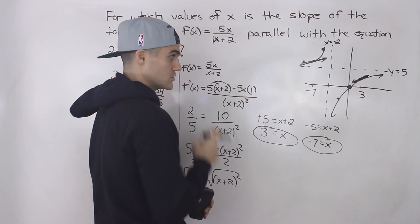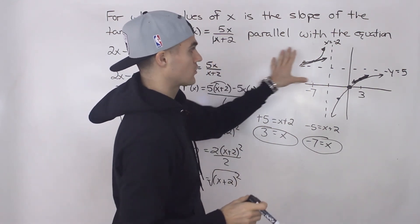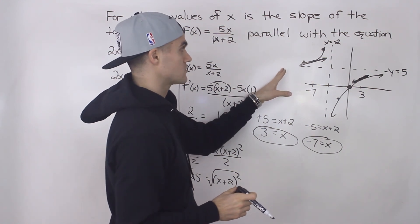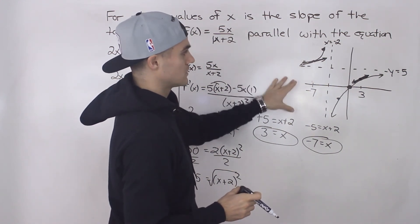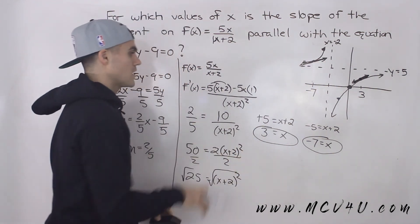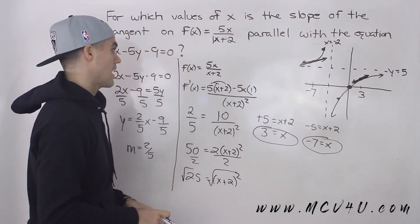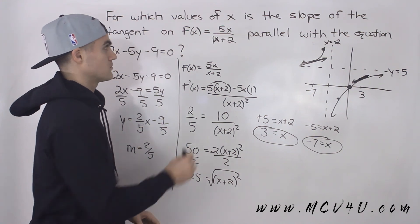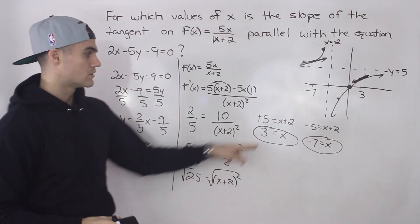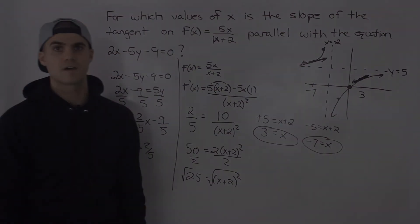So that's how you do it. And again, you're not always going to be able to graph the function out or it would take you a really long time to. But I thought I would do it in this question just so you could see visually what's going on before we get into the math. And then the math is pretty simple. You just find the derivative, find the slope of the line, make them equal, solve for those x values.